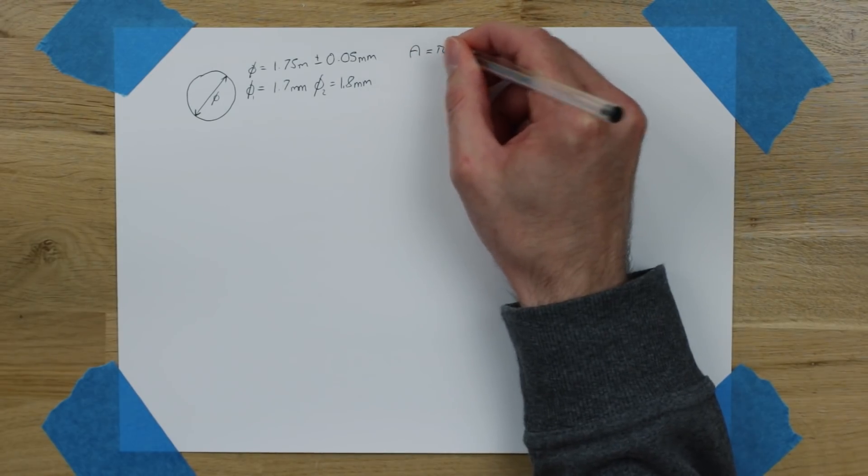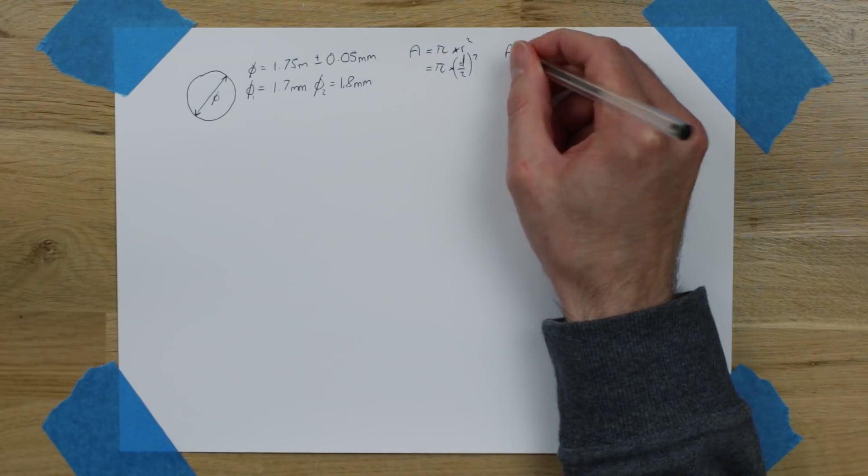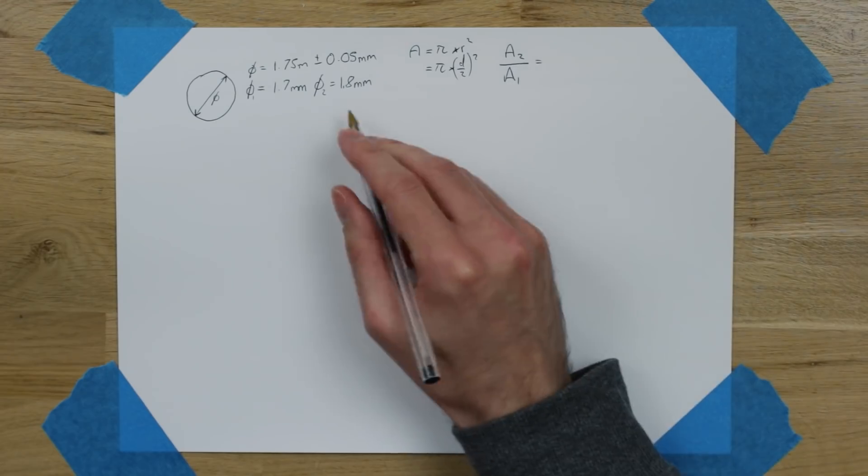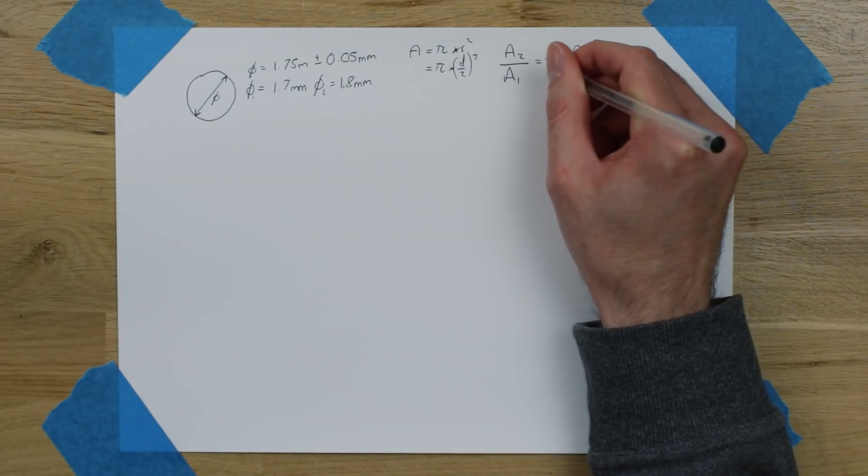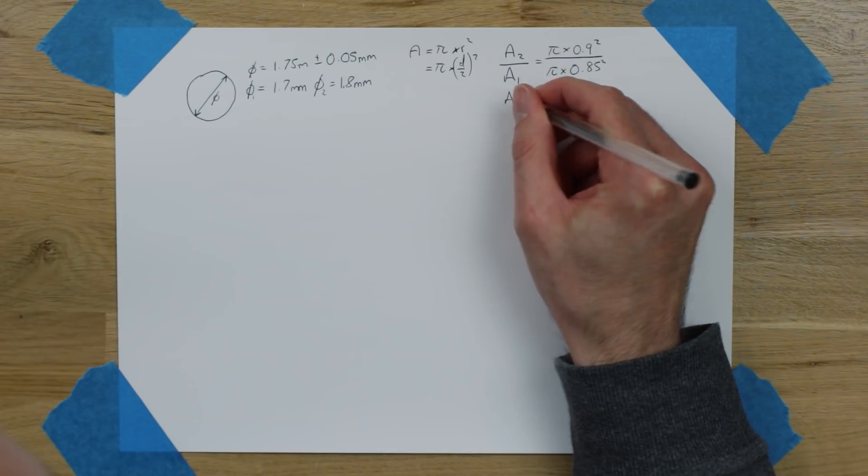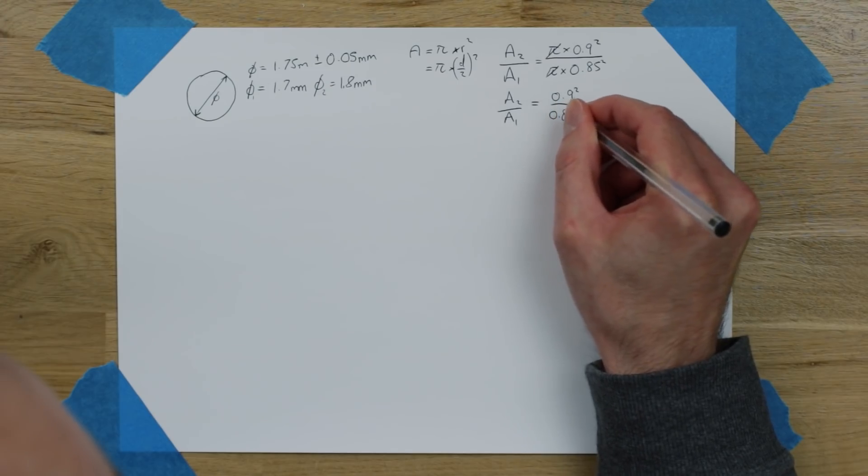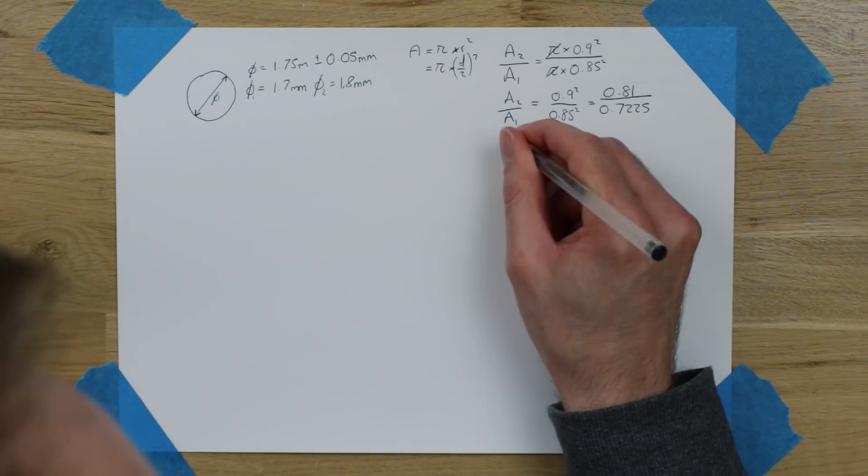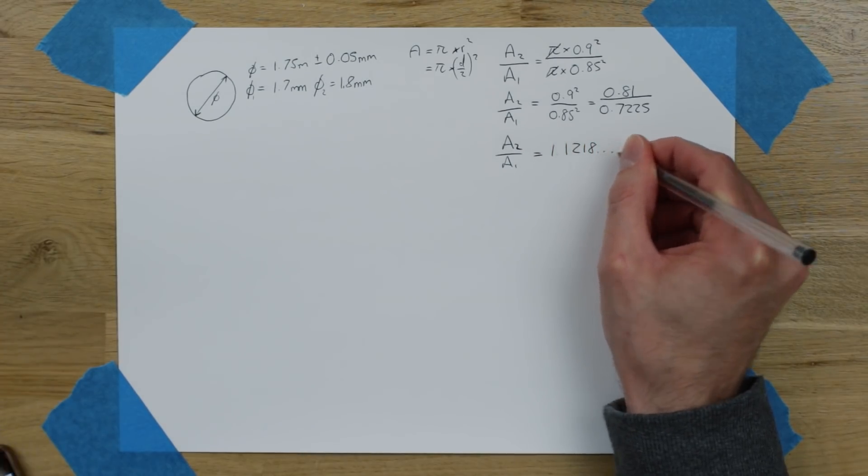The area in general is pi times the radius squared. Or we've got diameter, so it's d over 2 squared. And we want to do a2 divided by a1. So, the larger area divided by the smaller area and that will give us a ratio. So, a2 is pi times 1.8 divided by 2. So, that's 0.9 squared. And a1 is pi times 1.7 divided by 2 is 0.85 squared. Therefore, a2 over a1. We can cancel out pi. And we get 0.9 squared over 0.85 squared, which is 0.81 divided by 0.7225.